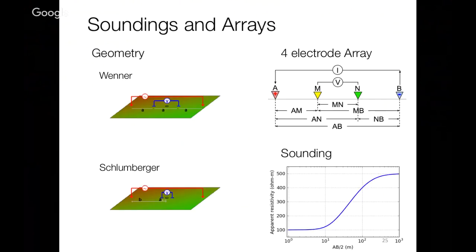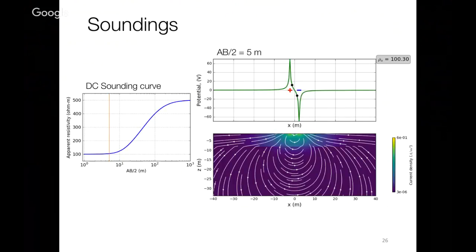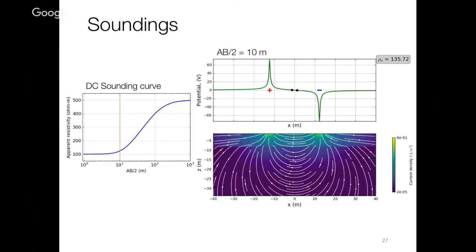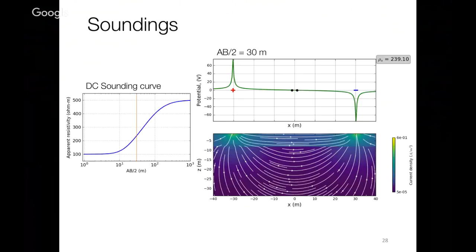The idea with the sounding is that if you take either of these configurations and expand out from a central point, you're gradually seeing deeper and deeper. When everything is really close together, the currents are shallow and the apparent resistivity is essentially just that of the upper layer — 100 ohm-meters. As you go farther, the currents slip deeper and the apparent resistivity is 135. We can start to plot this on what we call a sounding curve. As we go even farther, apparent resistivity gets up over 200, building up the sounding curve.